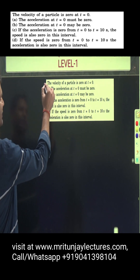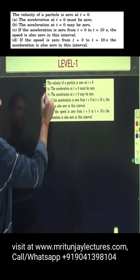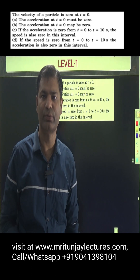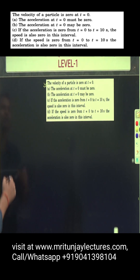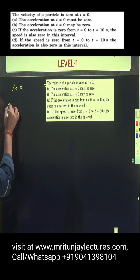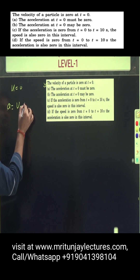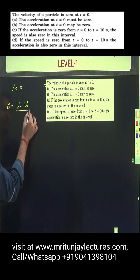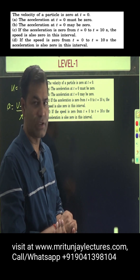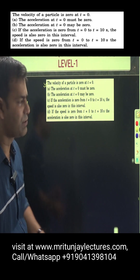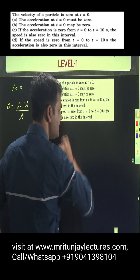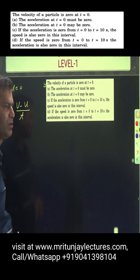Now, the corresponding question: the velocity of a particle is 0 at t=0, meaning initial velocity u is 0. What about acceleration? That is (v minus u) divided by t. The question asks: at t=0, must the acceleration also be 0?